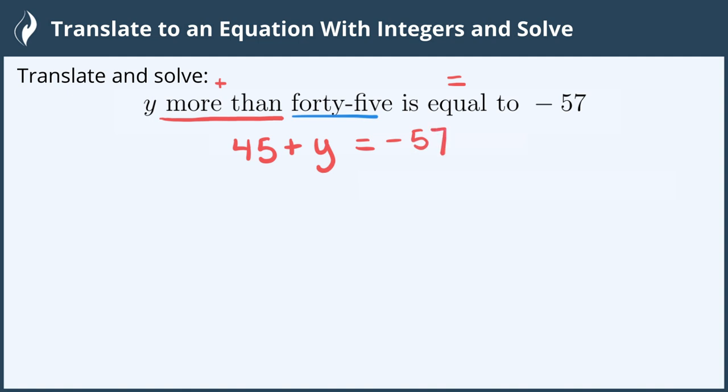Now that we've translated this, we can solve for y. To solve for a variable, we need to isolate it or get it all alone on one side of the equal sign. To do that, we find all operations around the y and do the opposite to negate it.